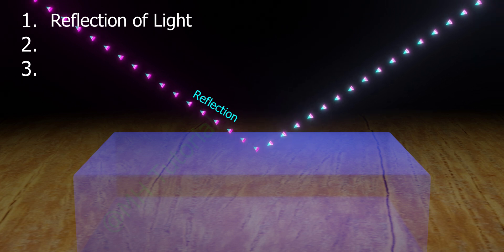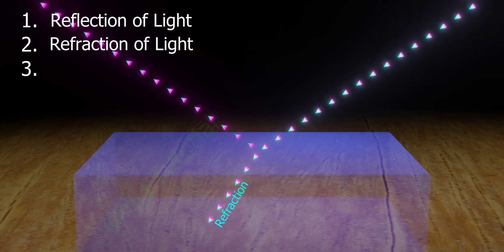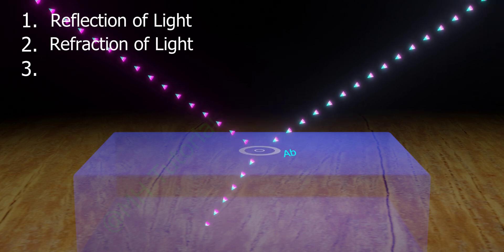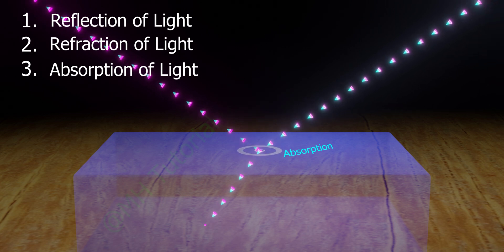A second portion enters the second medium. It is the refraction of light. And a third portion gets absorbed by the interface. This is known as absorption of light.